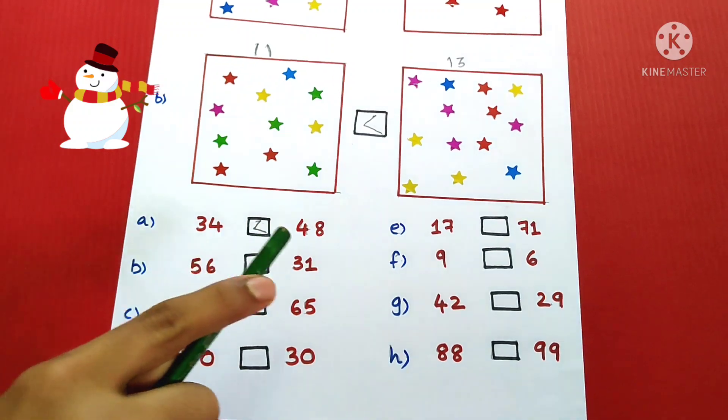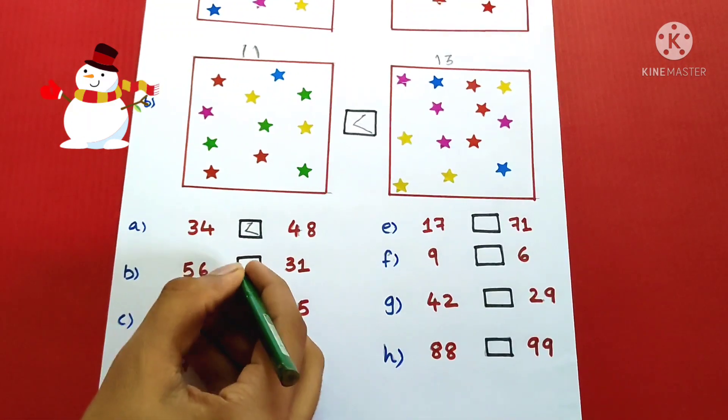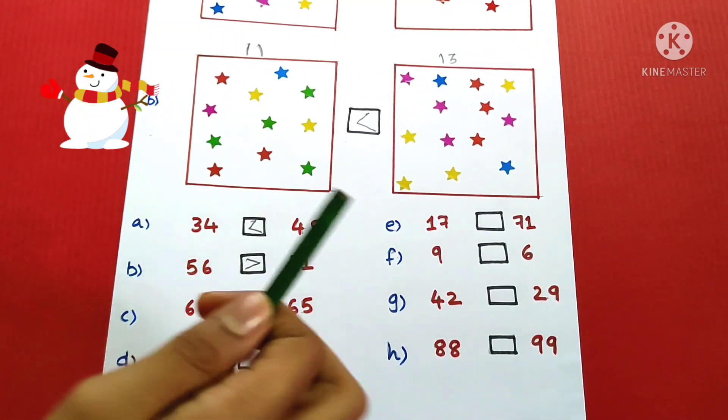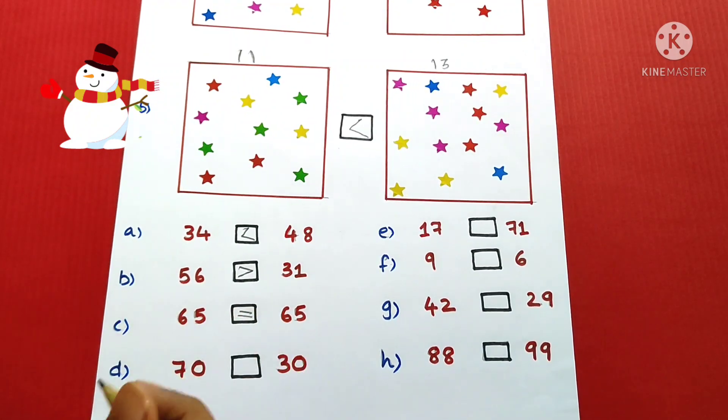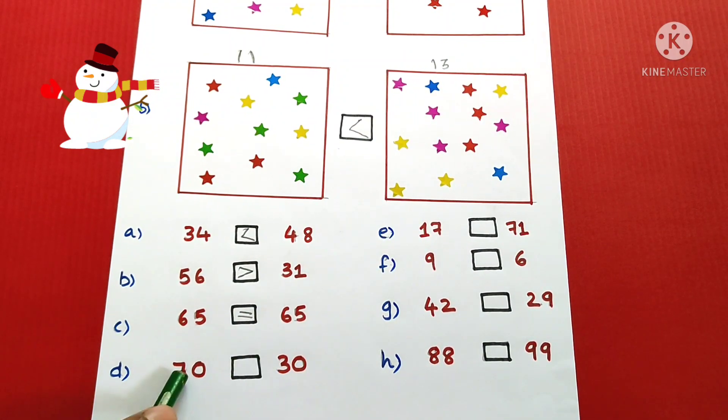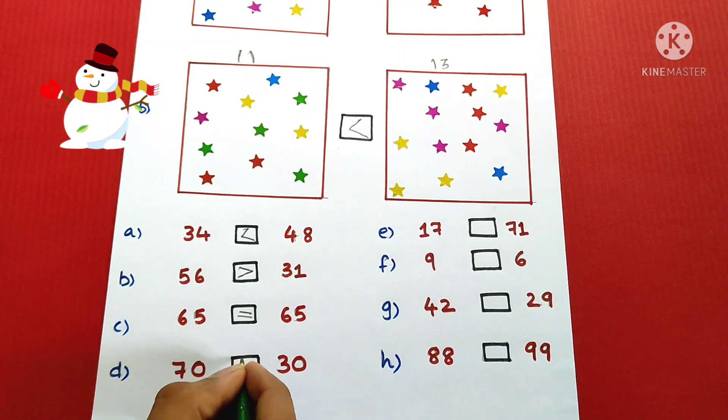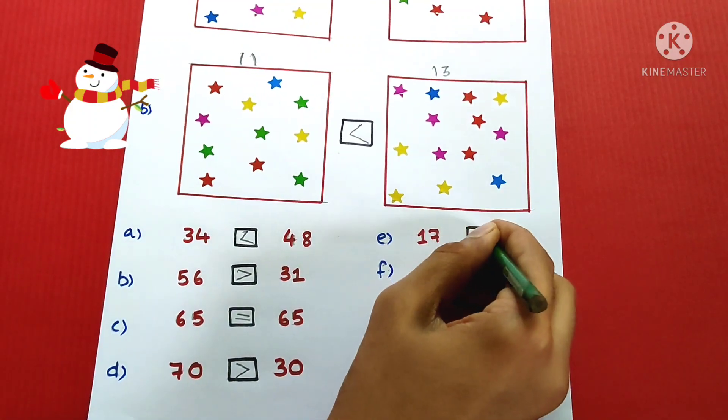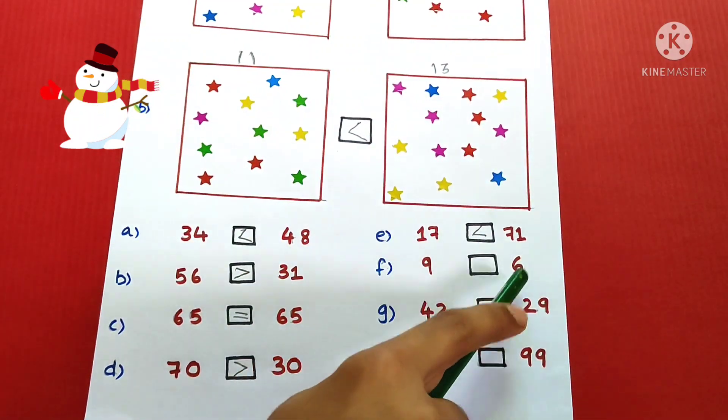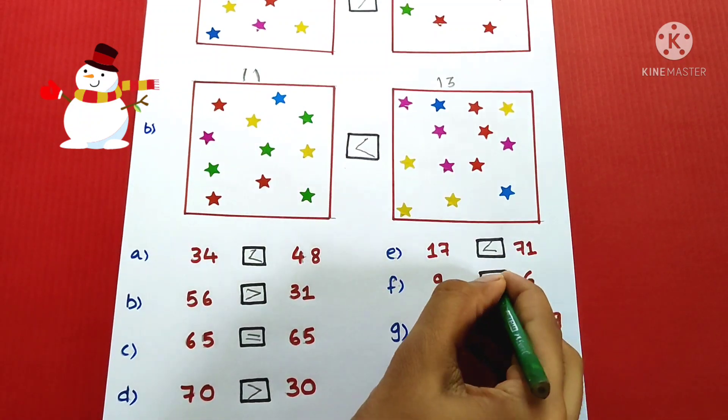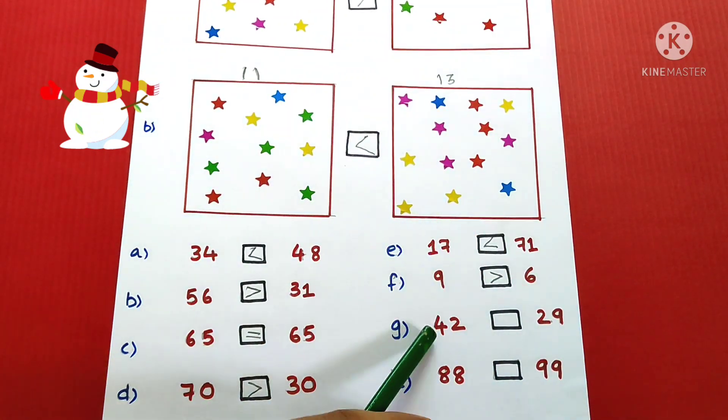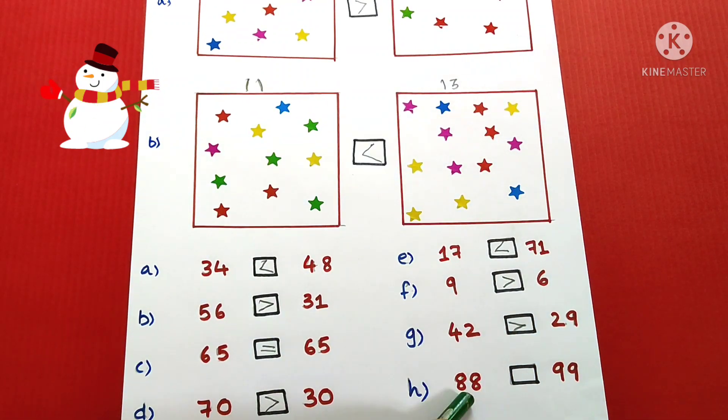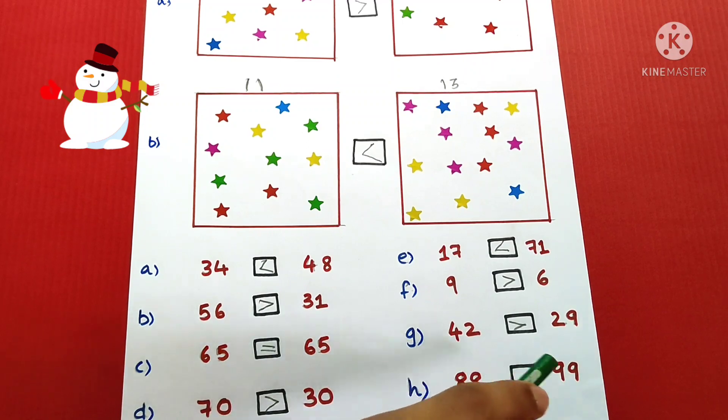5, 6. 9, 6. 9 is greater than 6. 42, 29. 42 is greater than 29. 88, 99. 88 is smaller than 99.